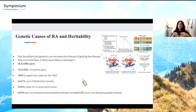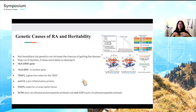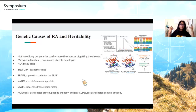Regarding the genetic causes of RA: it's not strictly hereditary — you won't automatically get it just because your mom has it. It's more that it runs in the family, giving you a higher chance of developing it. One key gene is HLADRB1, which codes for proteins essential for the immune system. When this gene gets mutated, the immune system starts to malfunction, making it one of the highest risk factors for developing RA.